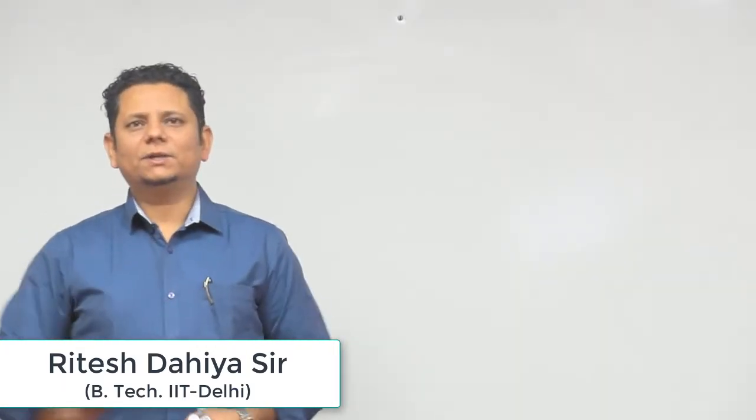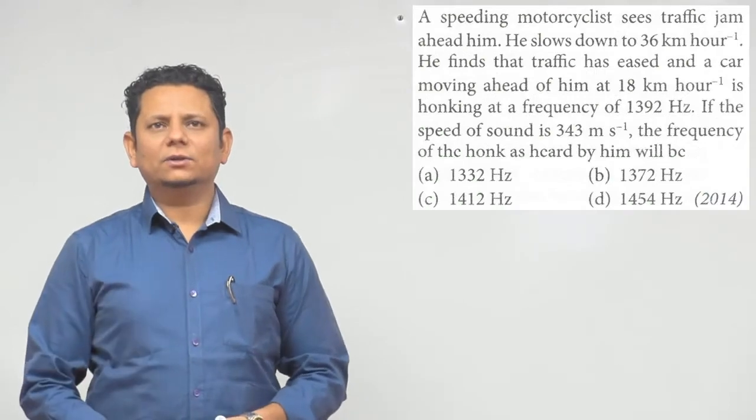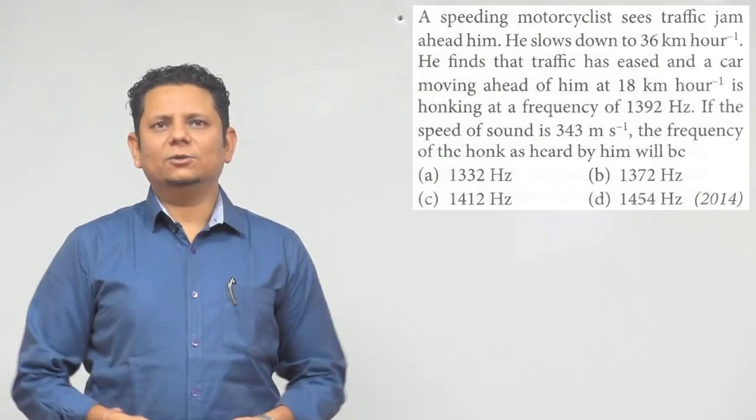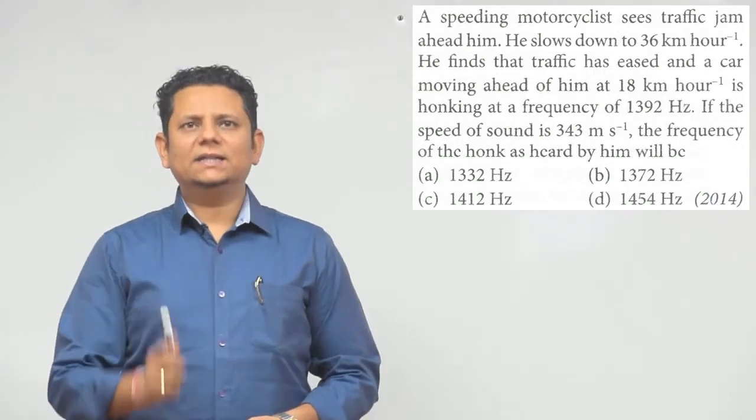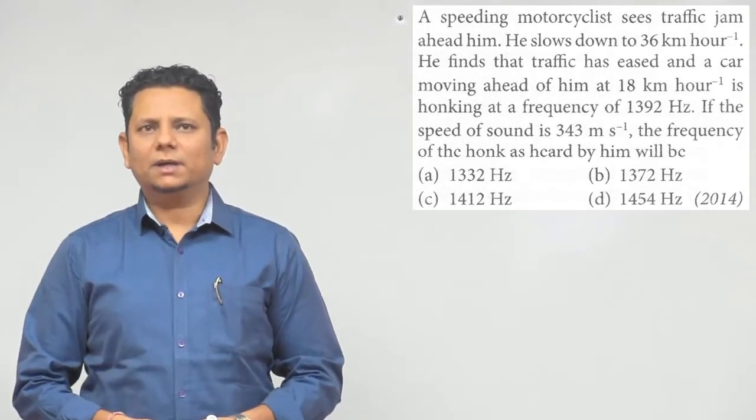Next question: A speeding motorcyclist sees traffic jam ahead of him. He slows down to 36 kilometer per hour. He finds that traffic has eased and a car moving ahead of him at 18 kilometer per hour